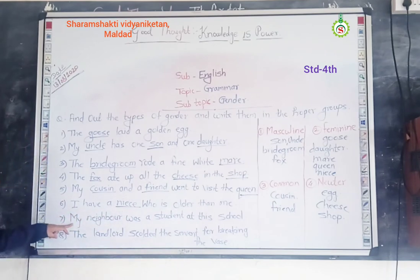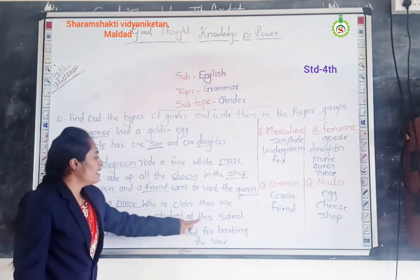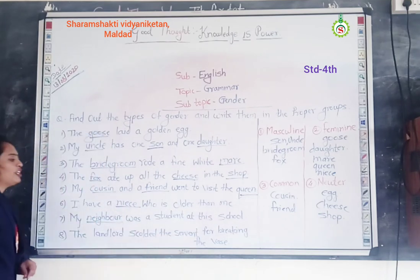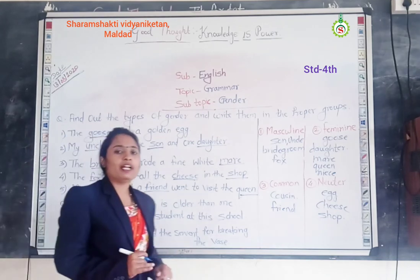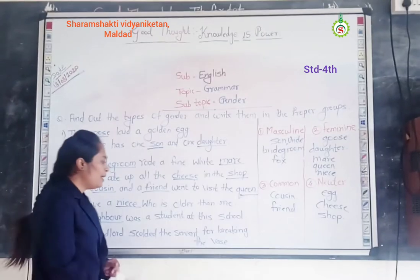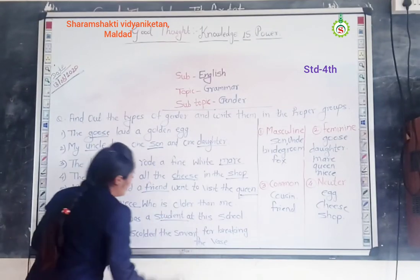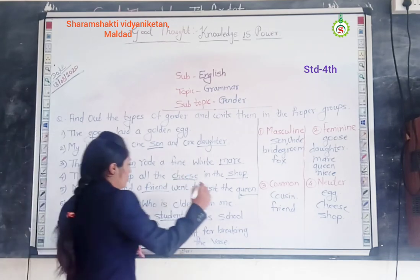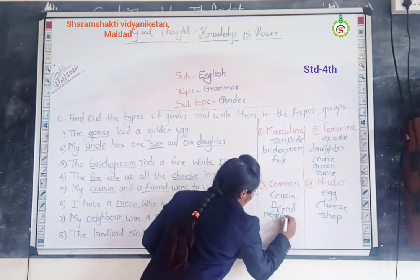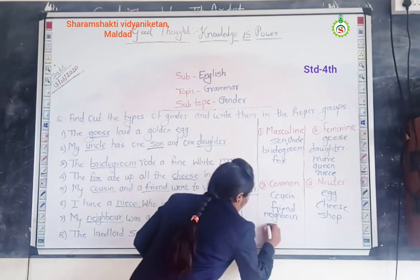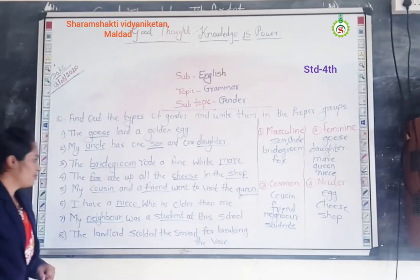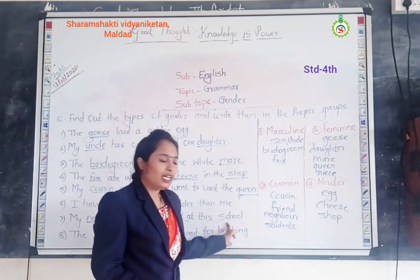Seventh sentence: My neighbor was a student at this school. In this sentence, neighbor is a common gender and student is also a common gender — used for either male or female. School is a neuter gender.